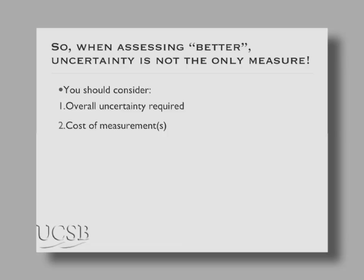You need to think about how much it actually costs to make a measurement. The purchase price is the easy number to remember — you go to your advisor as a graduate student and say 'I'd like to buy one of these,' and they say '80,000? No.' But if you know what the overall uncertainty you require is, that's an easy discussion: yes, I could use that gadget, or no, it won't work.